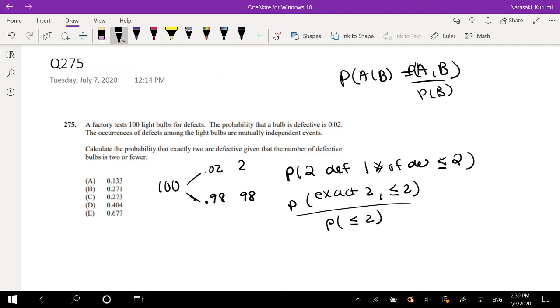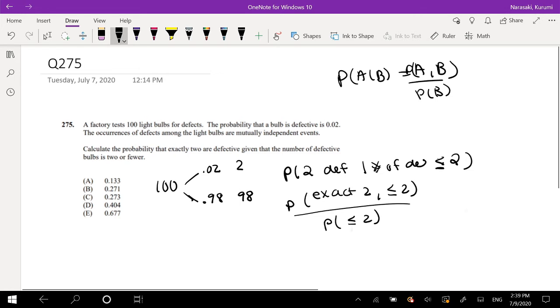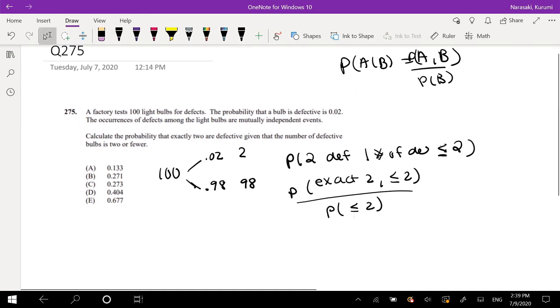Well, we know that if there is exactly 2 defective, then we know that already satisfies the less than or equal to 2 part. So we can actually just simplify the numerator to the probability that we have exactly 2 defective over the probability that defective is less than or equal to 2.